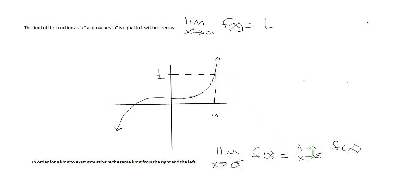The limit as x approaches a from the left would be this side of the function. Both of those need to equal each other to have a two-sided limit, and in this case they do.